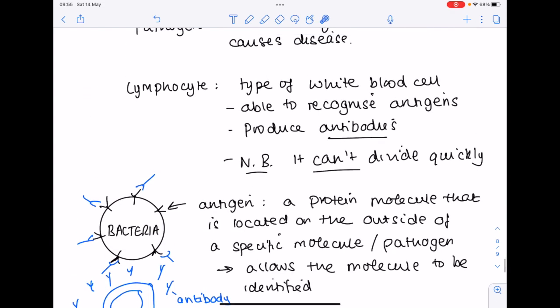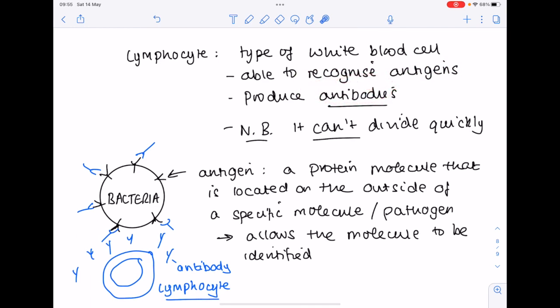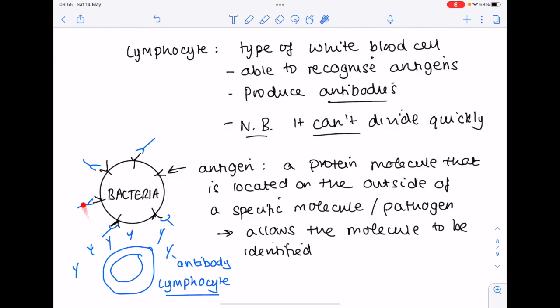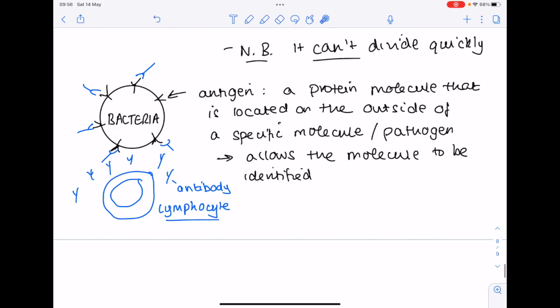So just to look back, what is a lymphocyte? Well it's a type of white blood cell able to recognize antigens and therefore produce antibodies. Within our bodies this is useful because it helps to kill the pathogen, but the main thing here is that it is able to recognize antigens and produce antibodies. A limitation is that it can't divide quickly.